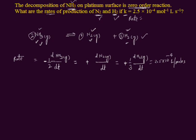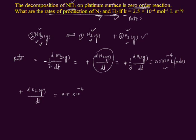Now we can find the rates of production of nitrogen gas and hydrogen gas. Let's find the rate of production of nitrogen gas first. The rate of reaction for nitrogen gas equals this value, so: +D[N₂(g)] / dt = 2.5 × 10⁻⁴ mol·L⁻¹·s⁻¹. This is the rate of production of nitrogen gas in the reaction.